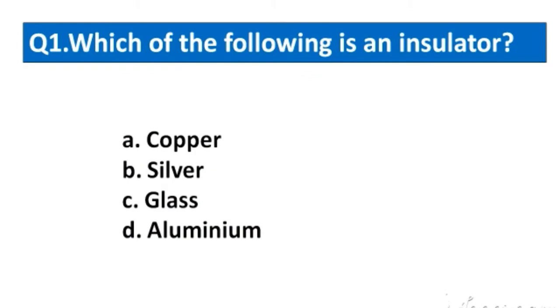Question number 1. Which of the following is an insulator? Options A. Copper, B. Silver, C. Glass, D. Aluminium. The right answer option C. Glass.